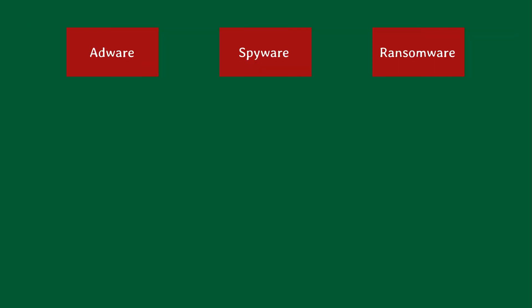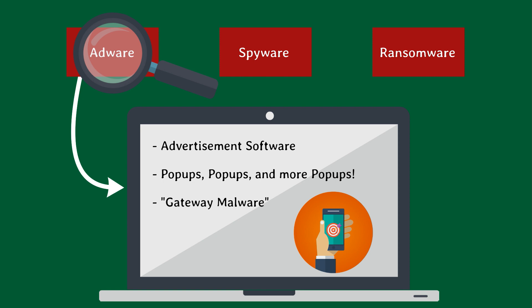These next few subcategories refer to a few different types of smaller families of malware. Often they are considered their own category, but nevertheless they are malicious and undesirable software. The most popular of which is adware. Adware is software that typically does not openly damage your computer, but can cause a lot of pop-ups and advertisements that no one wants to deal with. Perhaps the most dangerous part of it is that the advertisements often link to other, more serious types of malware, making adware the gateway malware.